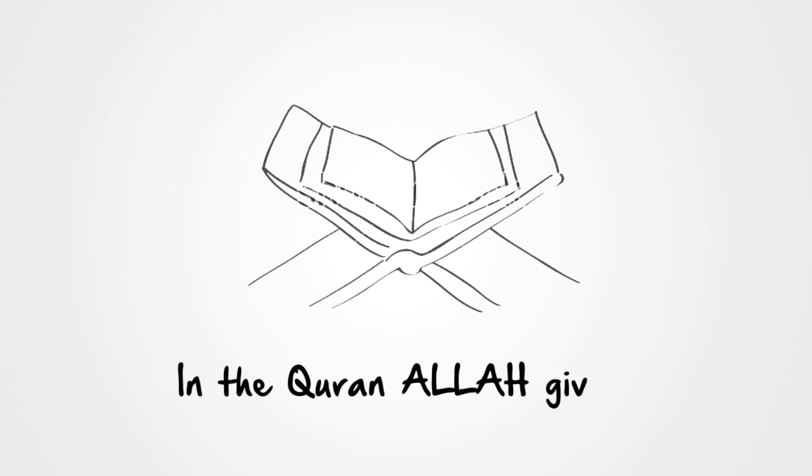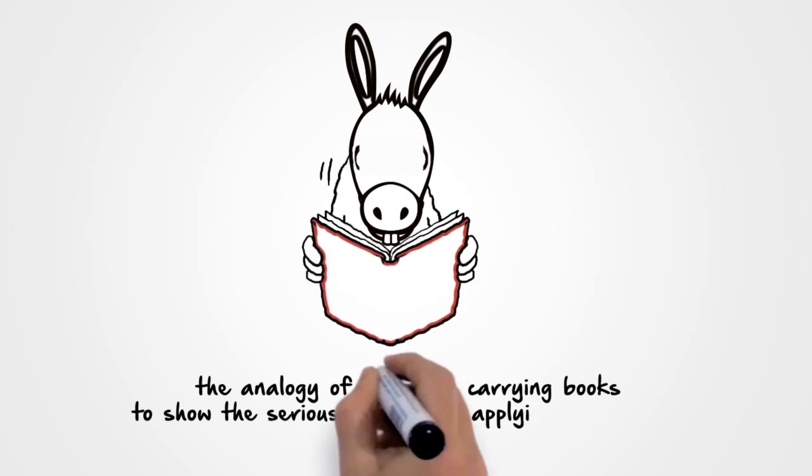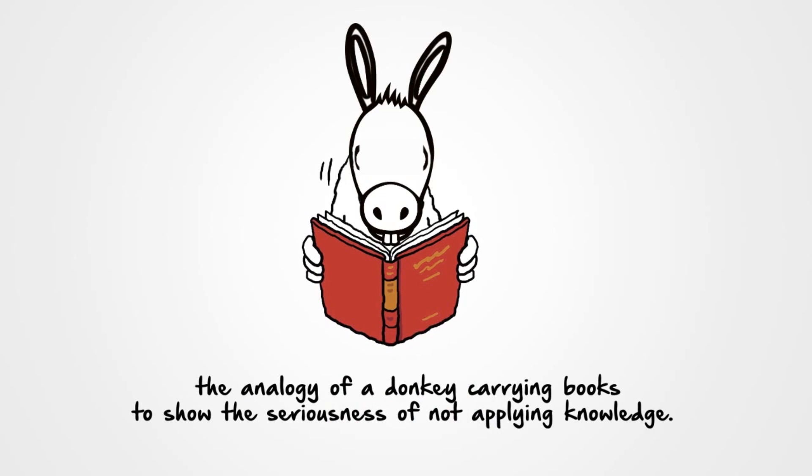In the Quran, Allah gives the analogy of a donkey carrying books to show the seriousness of not applying knowledge. The books just weigh down the donkey and don't benefit it.